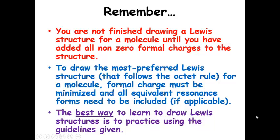Just some reminders: you're not finished drawing Lewis structures for a molecule until you've added all the non-zero formal charges to the structure. To draw the most preferred structure that follows the octet rule, formal charge needs to be minimized and all equivalent resonance forms need to be included — if applicable. If there are equivalent resonance forms, you need to include them. And as always, the best way to learn to draw Lewis structures is to practice.